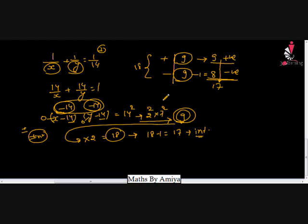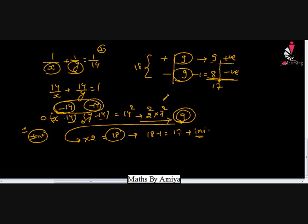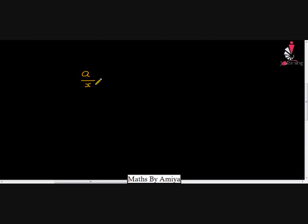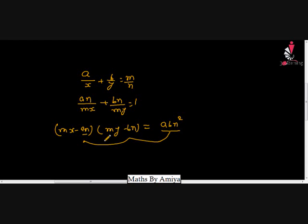This is the concept. Now I am writing the general equation to convert to factor form. If we have a/x plus b/y equal to m/n, our first aim is to make RHS equal to 1: multiply through to get an/mx plus bn/my equal to 1. The general factor form is then (mx minus an)(my minus bn) equal to the product of constant terms, which is ab·n squared. We work upon the factors of ab·n squared according to the question.